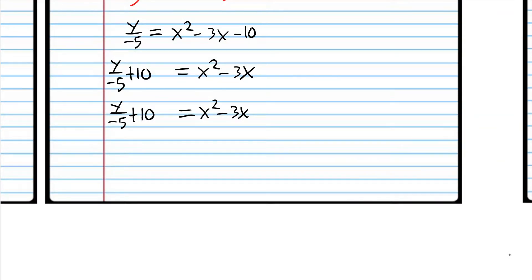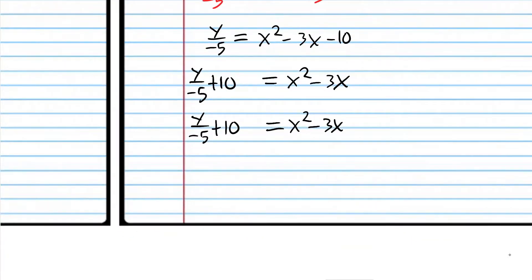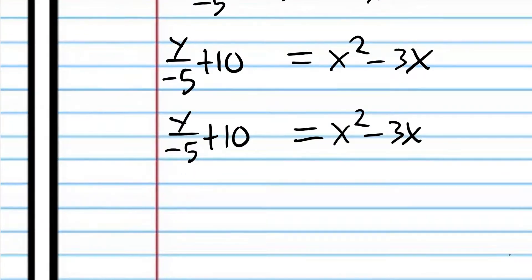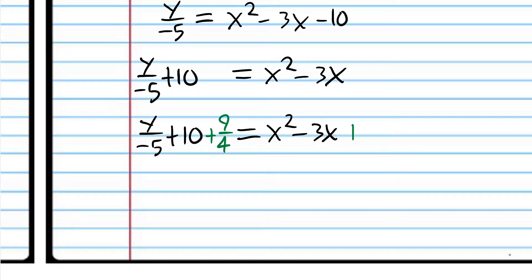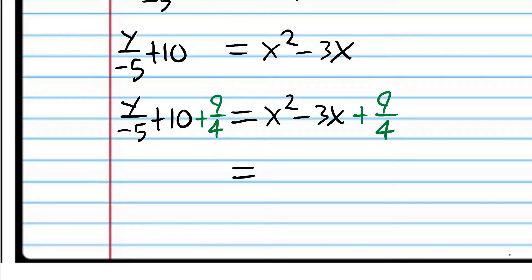A lot of times in intermediate algebra courses, they don't show you this step with fractions — they just expect you to know it. So we add 9 fourths to both sides. The factor here is just x minus 3 halves. For the constant side: writing 10 as 40 over 4, then 40 over 4 plus 9 over 4 is 49 over 4. This is just basic fraction arithmetic — any whole number can be written over 1, and we use the fundamental principle of fractions.